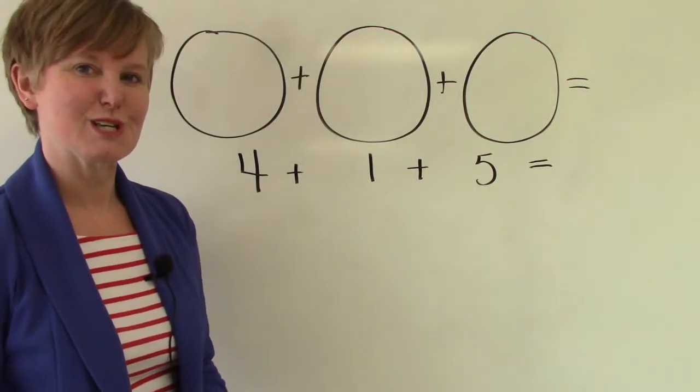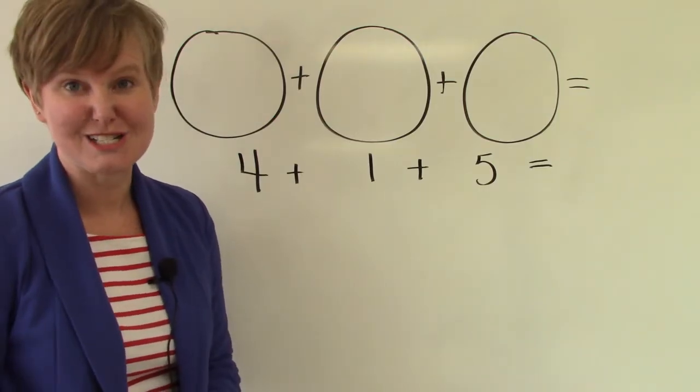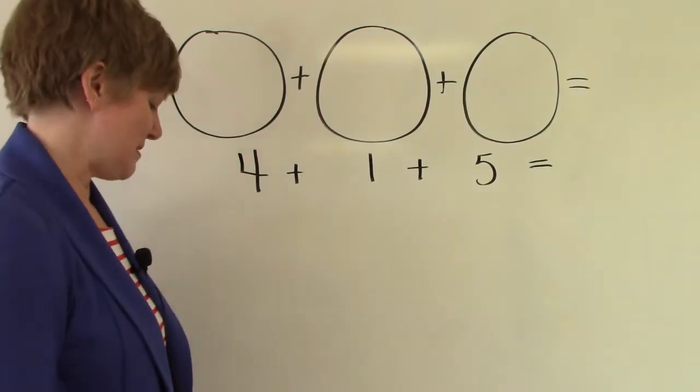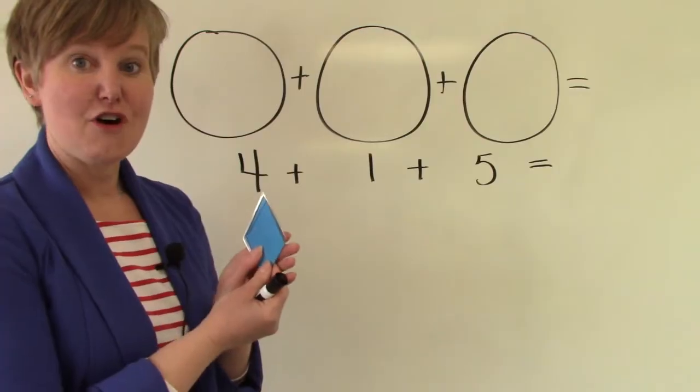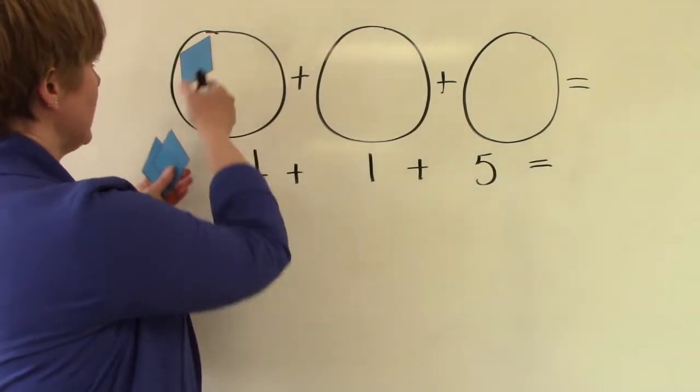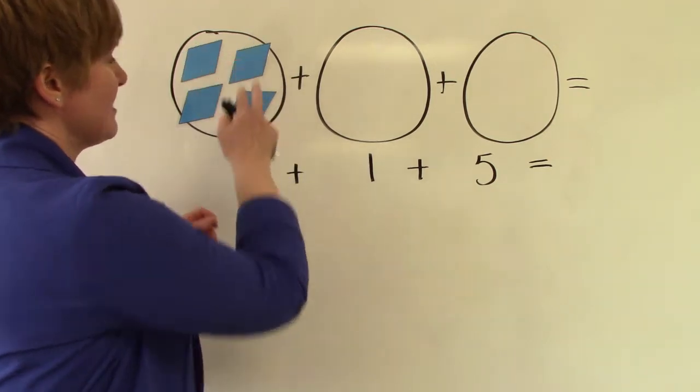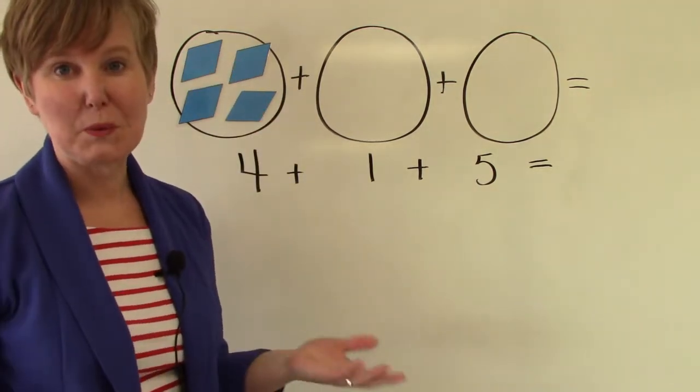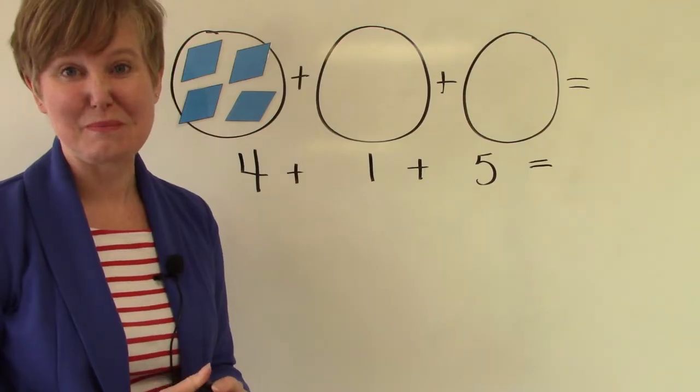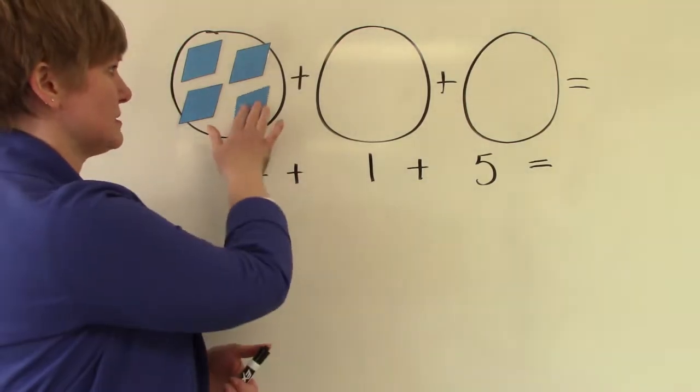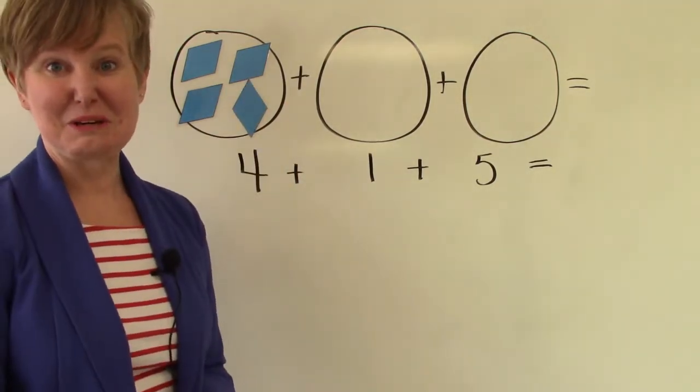I sometimes think it's easier if we have objects to help us so let's do that. I have four. One, two, three, four. These are parallelograms or sometimes we call them a rhombus. I think if I turn them this way they look a little more like a diamond.